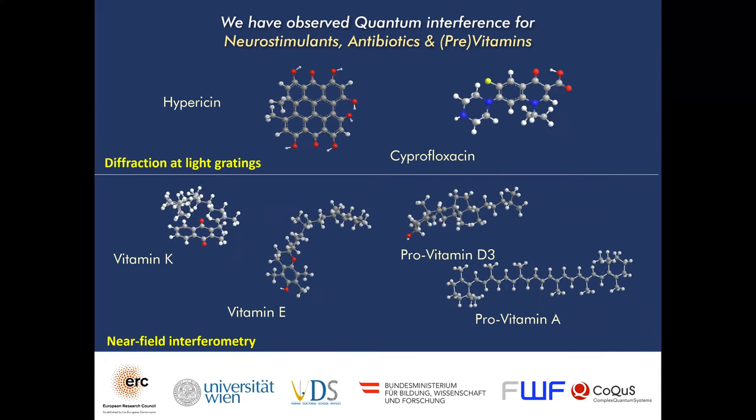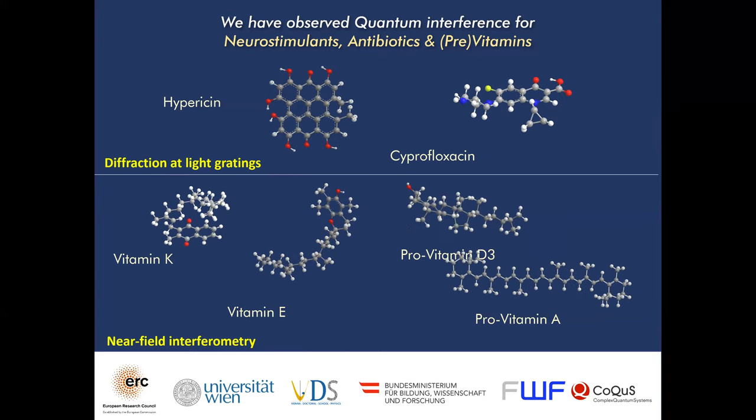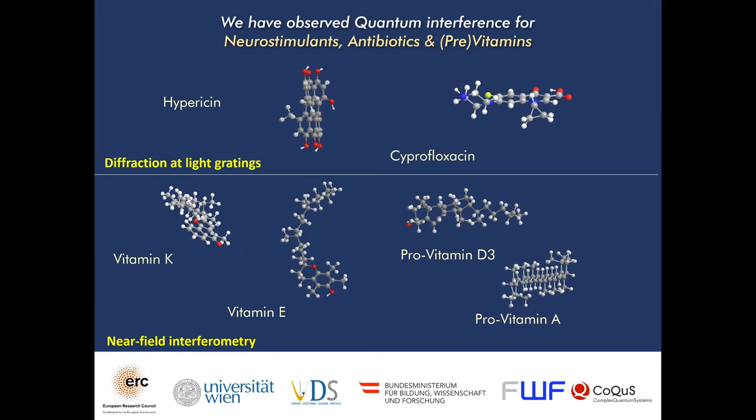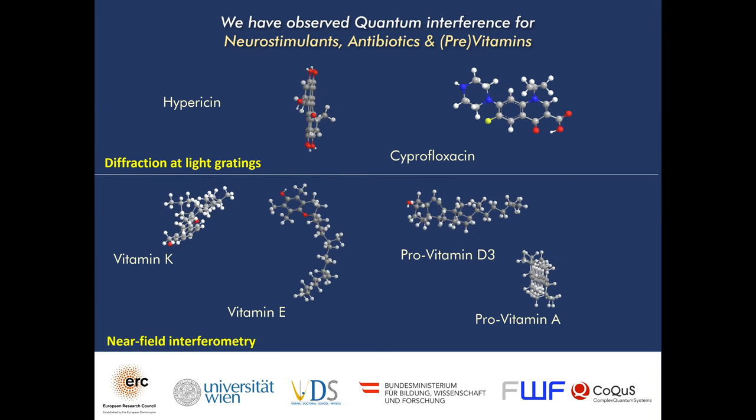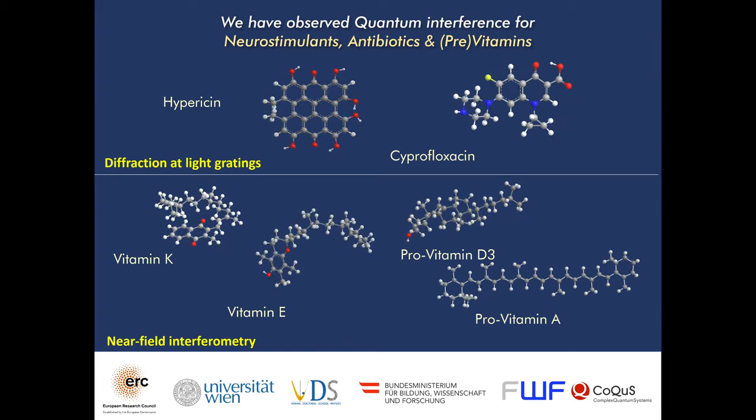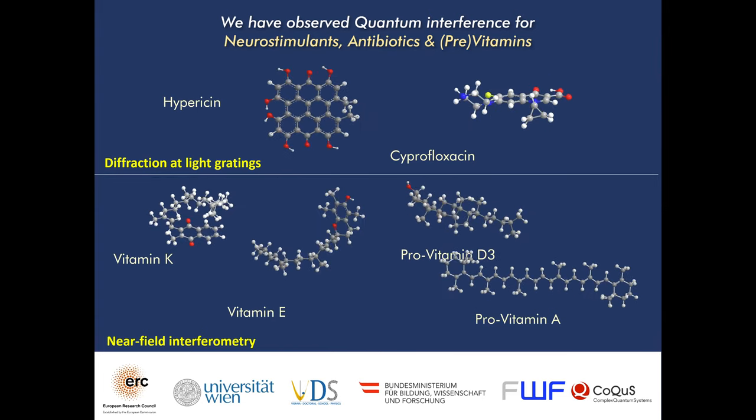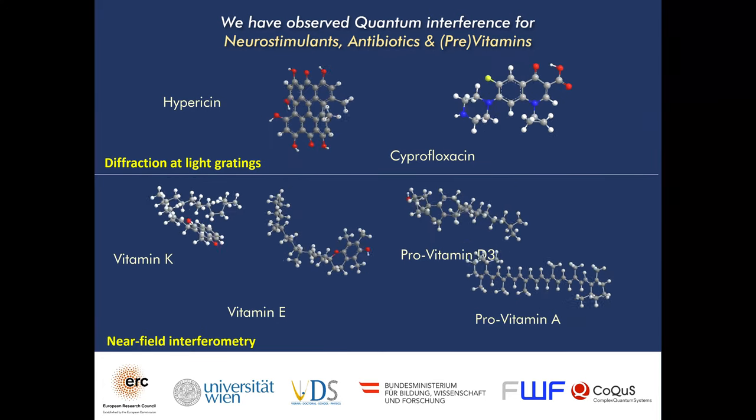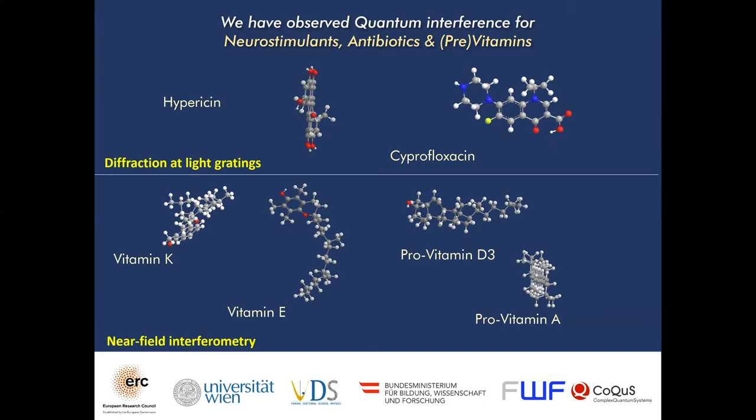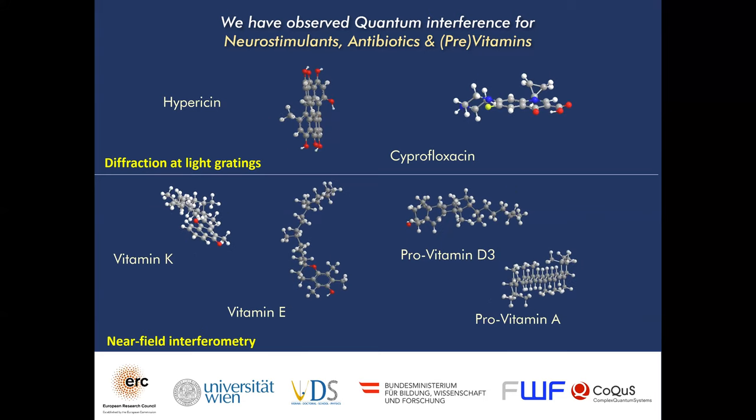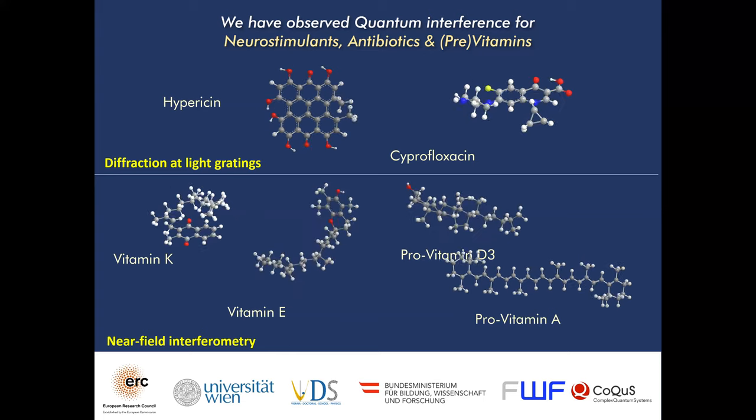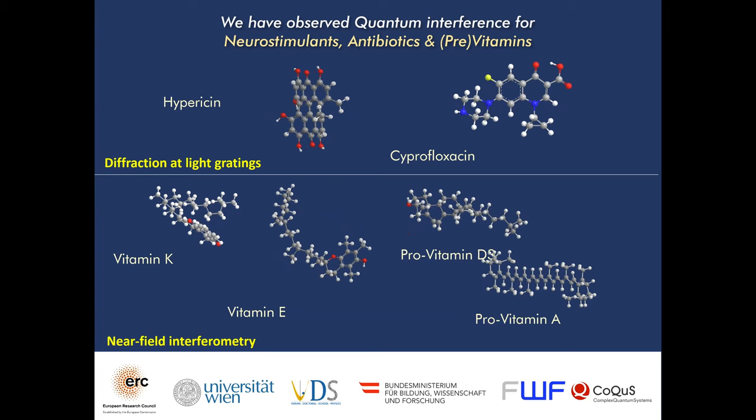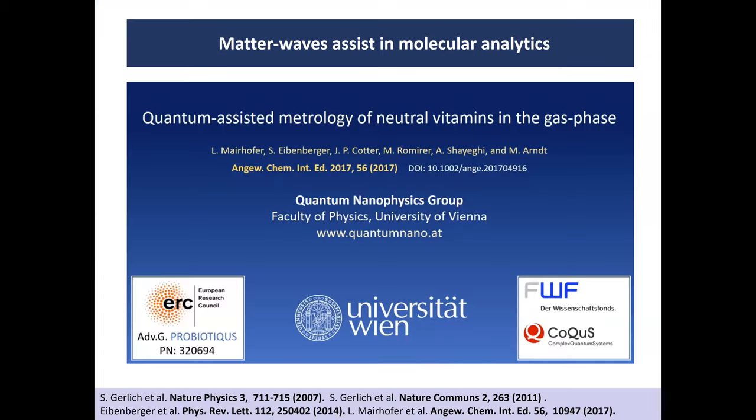And we've done this with small things like neurostimulants, antibiotics, vitamins, things that make you happy, things that kill a bacterial infection. Vitamins, a number of them are provitamins. And in various different experiments, they all showed nice interference. So certainly quantum interference is nothing specific and peculiar to a certain atom or electron or neutron. It kind of applies to everything. And that's why you also call it universal. We've seen it for so many different molecules.